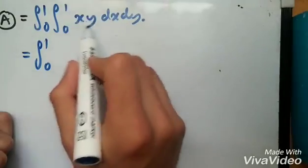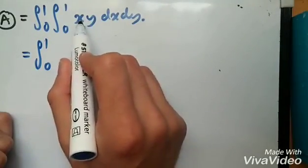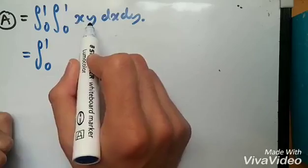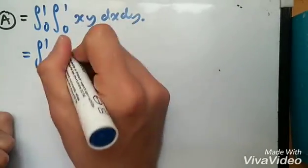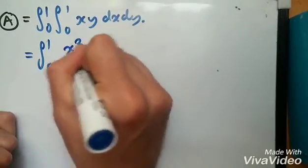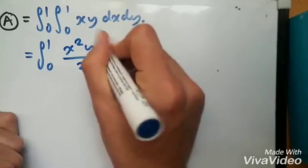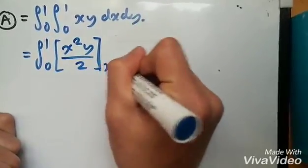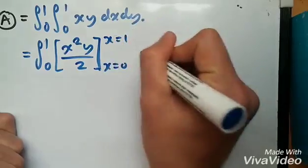So the inside part, if we integrate with respect to x, this would be raised to the power of 2 and you divide by 2, and then this is just a constant. So what we'd have is x²y over 2 with the limits from x equals 0 and x equals 1, dy.